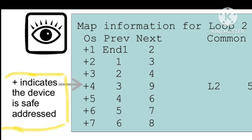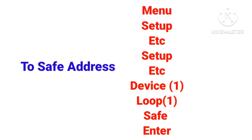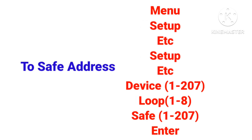It is clear that if we save our addresses, the labeling of the devices will not be altered in the panel. If you check the loop map, a plus symbol indicates the device is safe addressed. The plus mark — positive 1, positive 2, positive 3, or plus 1, plus 2, plus 3 — indicates that these are safe addresses.